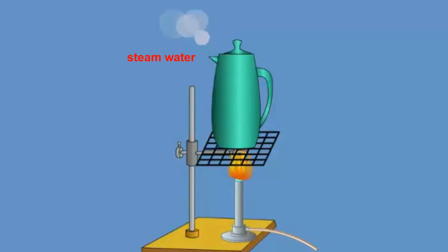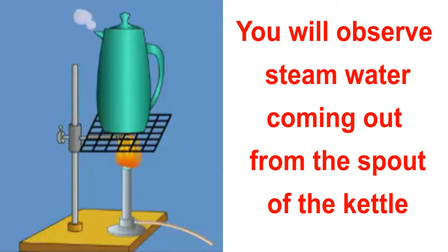Take a metal plate with some ice on it and hold it above the spout of the kettle with the help of pliers. You will observe that the steam coming out of the spout of the kettle, when it touches the cool metal plate, gets condensed and changes into liquid water.